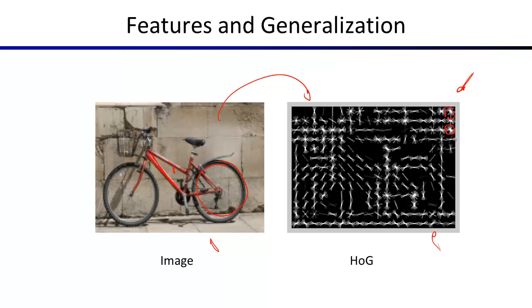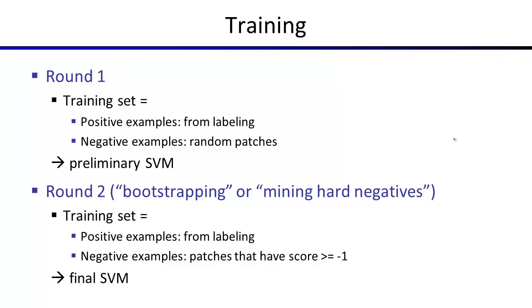So that's the first thing you have to do: build a good descriptor of your original image, and do this for all your training examples. Then you can feed these feature vectors as training examples into, say, a support vector machine.